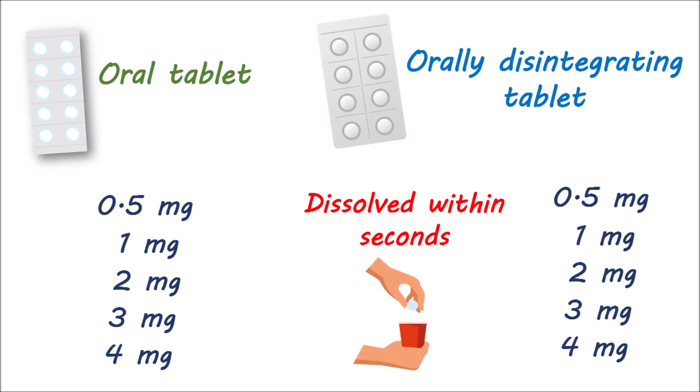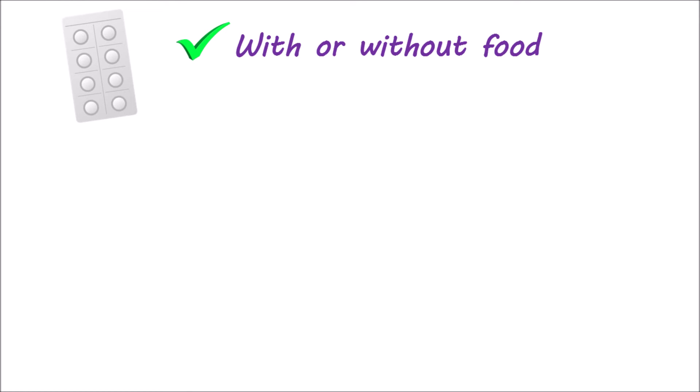Oral tablets are also available at the lowest strength of 0.25 milligrams, intended for patients with renal or hepatic failure where a low dose is initiated. Risperidone tablets can be taken either with or without food, and can be given either once or twice daily. In adults, they can be started at once a day, but in the elderly they can be given twice daily, cutting the dose administered each time. This distribution ensures a lower dose for the elderly, minimizing adverse effects.